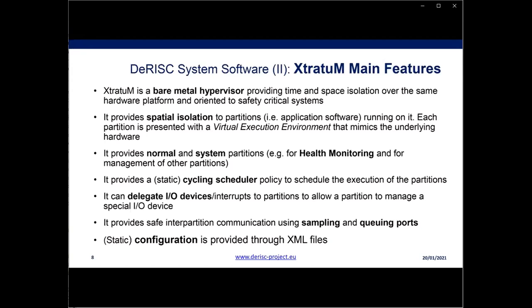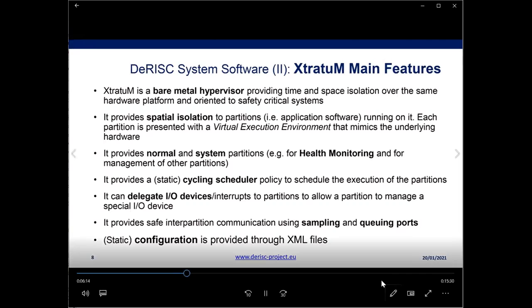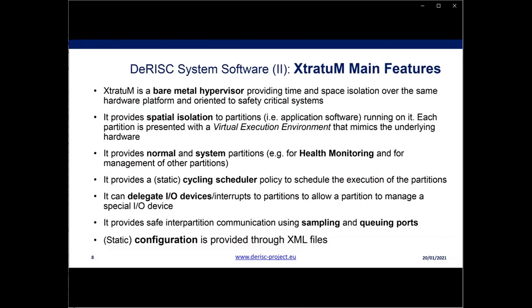Extratum provides two types of partitions: normal and system partitions. System partitions have special privileges and are meant to implement functions like health monitoring and management of other partitions. Extratum schedules different partitions using a cyclic static scheduler developed at design time before deploying. It can also delegate I/O devices and their corresponding interrupts to partitions, relieving the hypervisor from having to implement all I/O devices — making it simpler and easier to qualify.